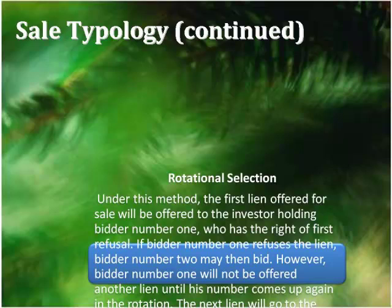Rotational bidding is when the auctioneer or tax collector goes around the room in a round-robin method, offering each property to the next person in line. That person says yes or no — if they refuse, they go to the back of the line and can't bid again until their turn comes up. If there are thirty people, they wait thirty turns; if sixty people, fifty-nine people go before they get another chance. That's round robin or rotational selection.